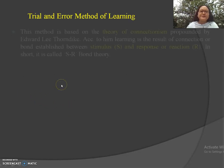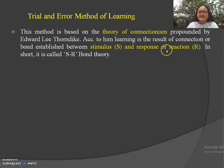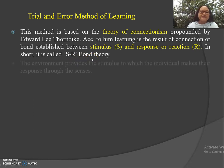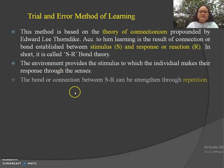Let us see the trial and error method of learning. This method is based on the theory of connectionism propounded by Edward Lee Thorndike. According to him, learning is a result of the connection or bond established between stimulus and response, so in short it is called the S-R bond theory. The environment provides the stimulus to which the individual makes their response through the senses. The bond between stimulus and response can be strengthened through repetition.